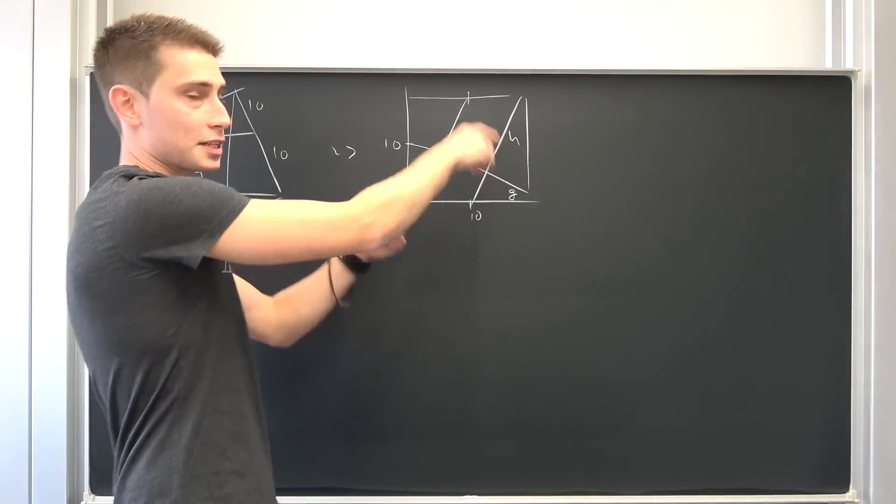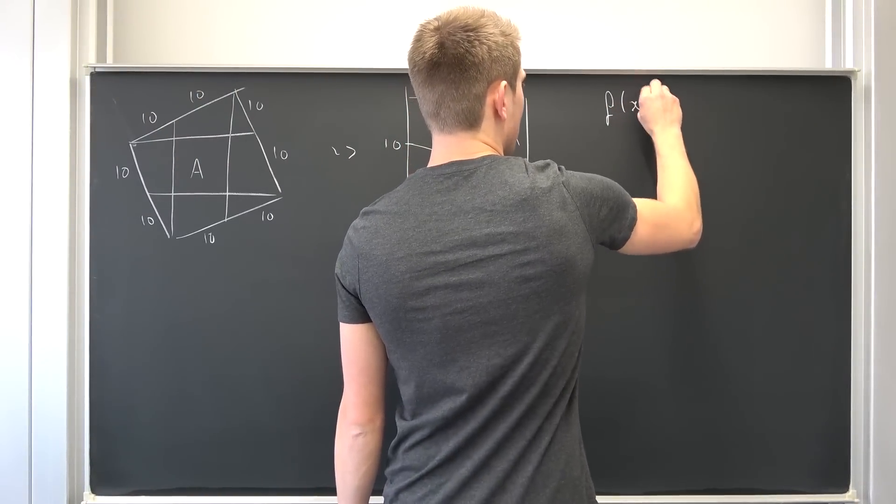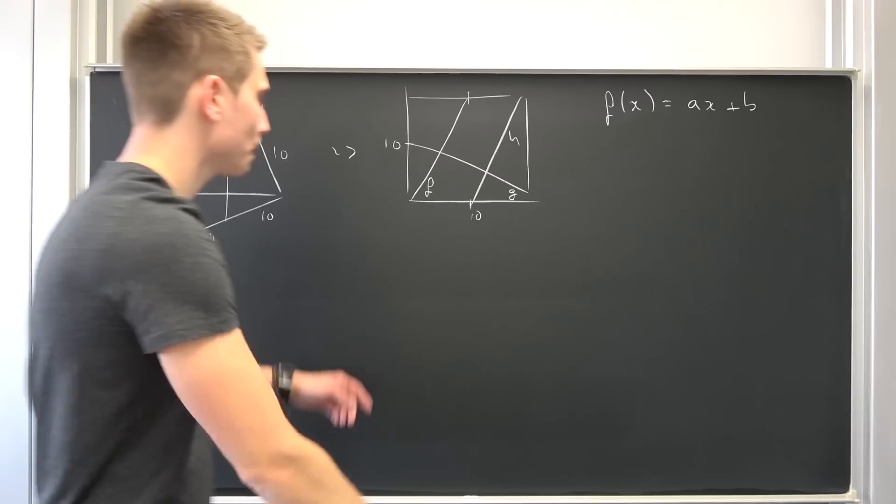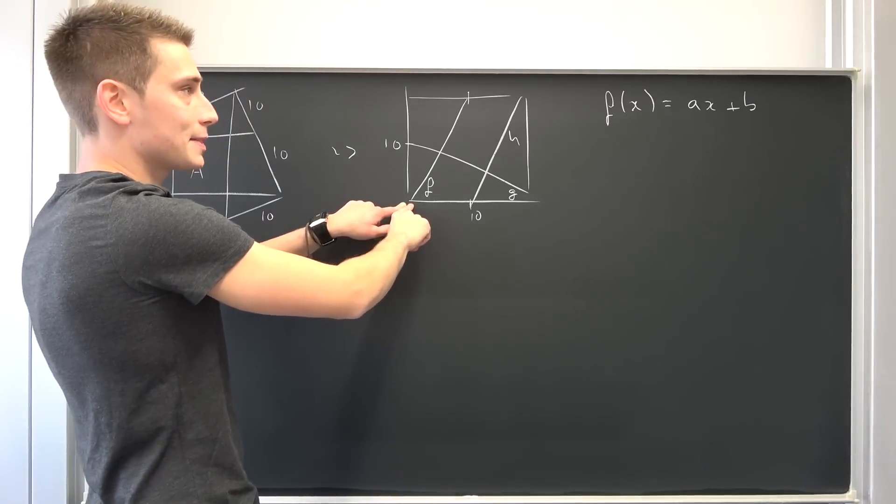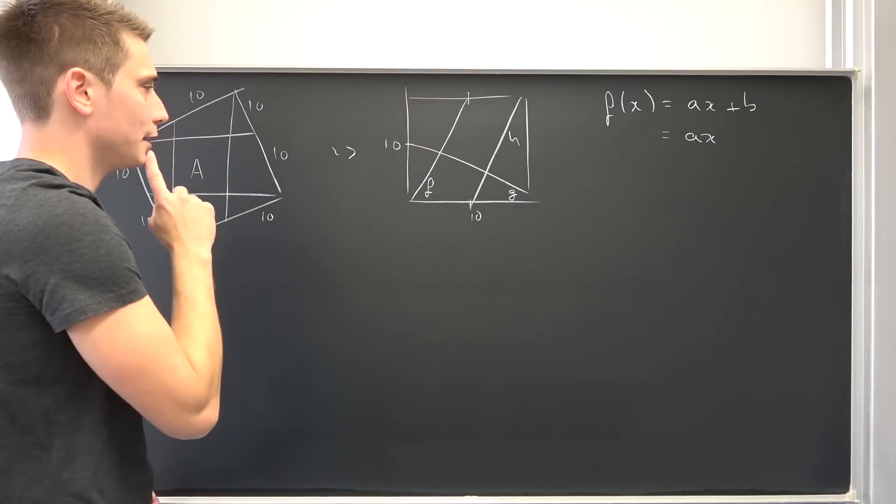Let us see what those points of intersections actually are. If we take a look at f of x, in the normal case we have something like ax plus b. Now our y intercept is exactly at 0, leaving us with just ax.